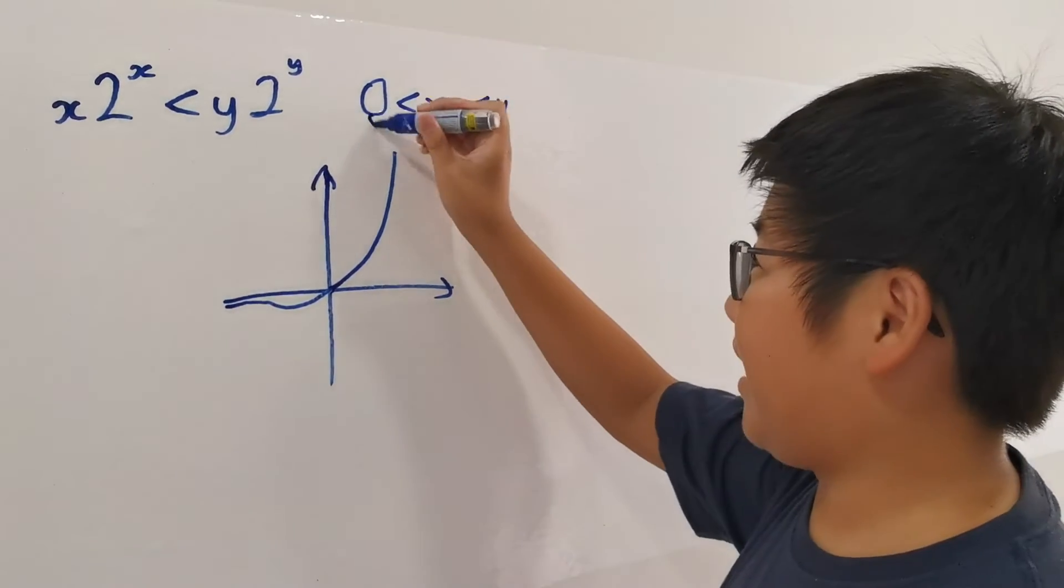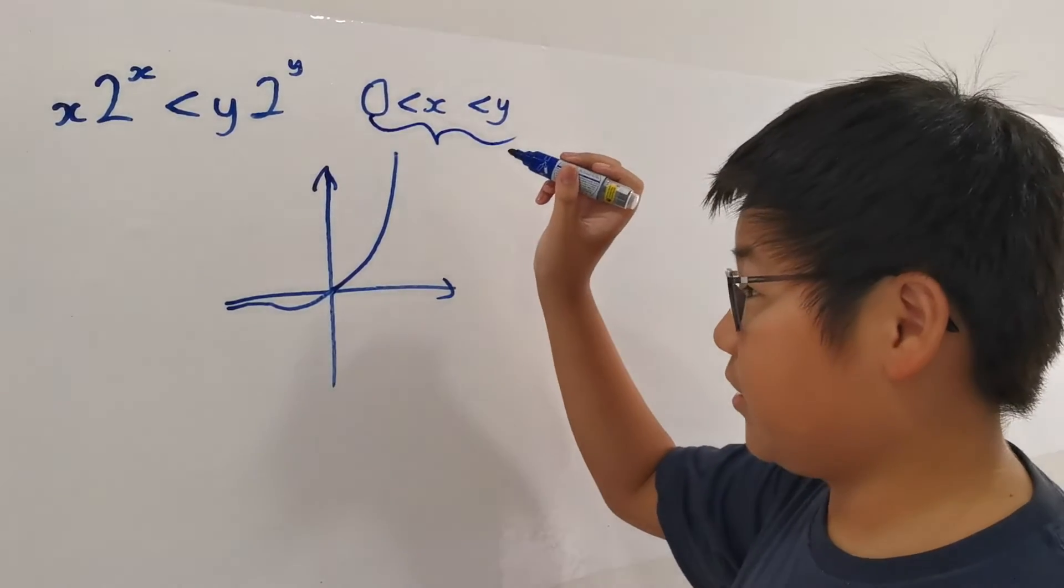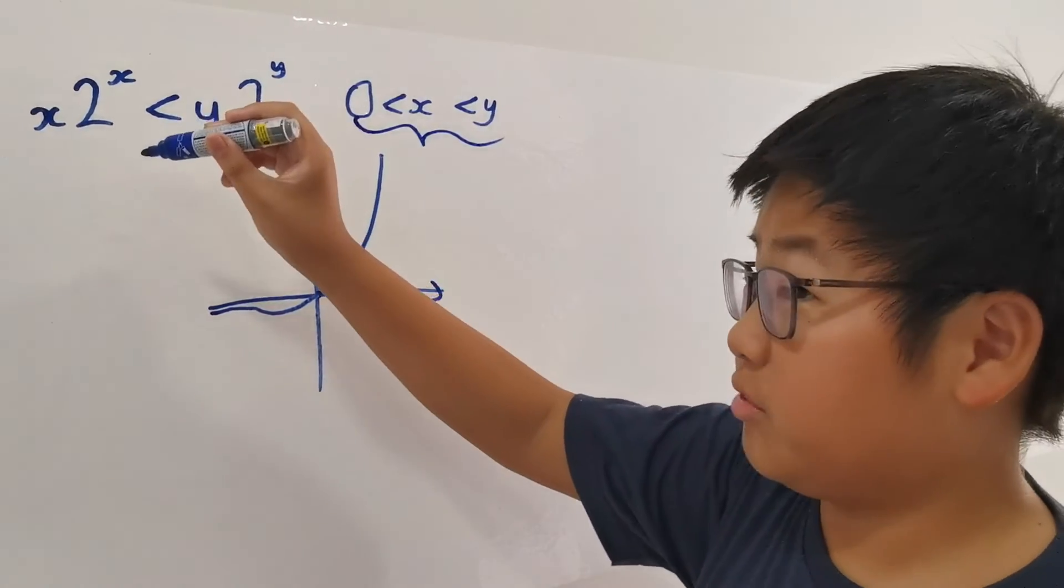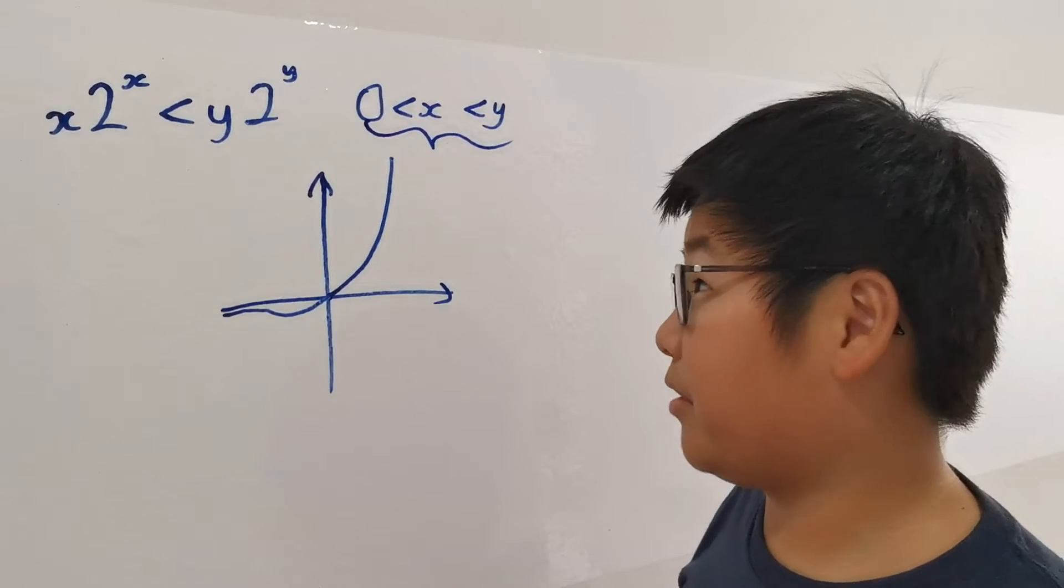But this says that x and y are positive. And x is a strictly increasing function, so it's 2 to the power of x.